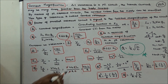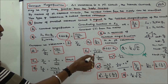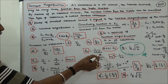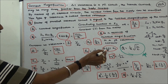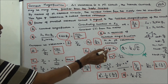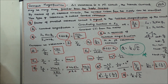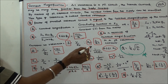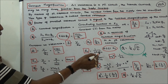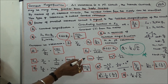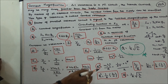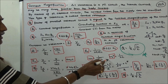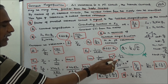We know the resonant frequency FR equals 1 by 2π times the square root of L times C. The condition applied is that R is very much less than XL, so we neglect R. Therefore FR equals 1 by 2π·√(LC), and ωR equals 1 by √(LC), meaning ωR² equals 1 by LC.